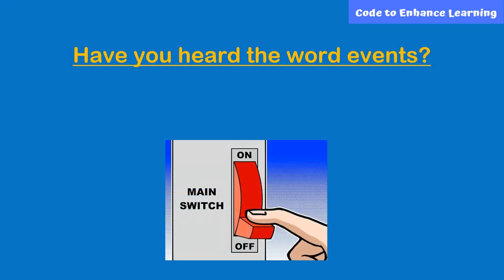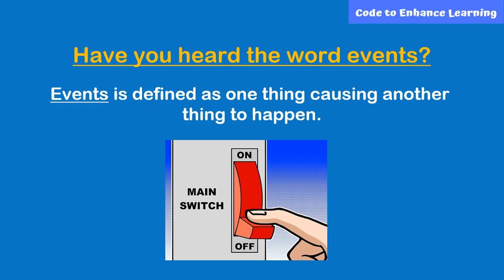Have you heard the word events? Events is defined as one thing causing another thing to happen. For example, in daily routine, whenever we want to use the fan, we switch it on. Else, we switch it off.